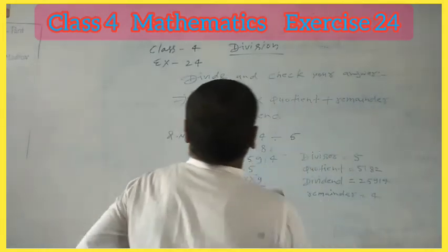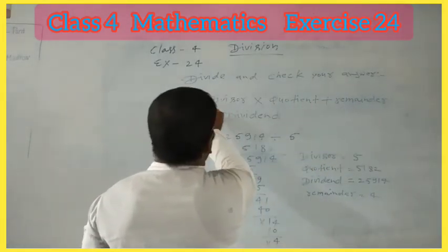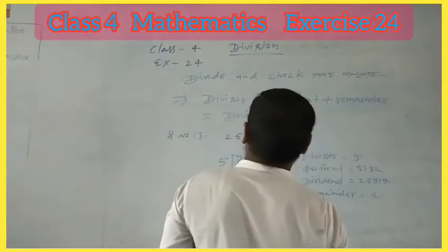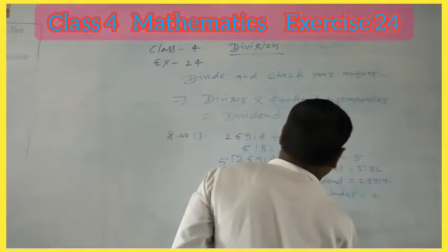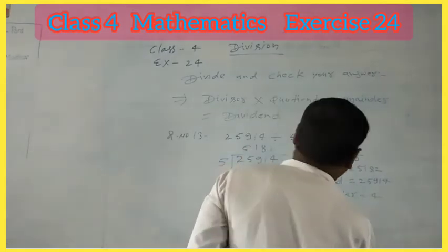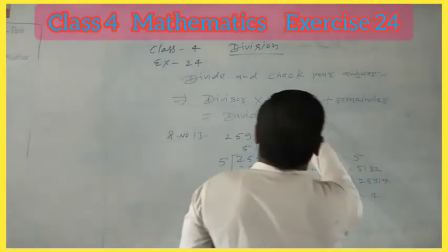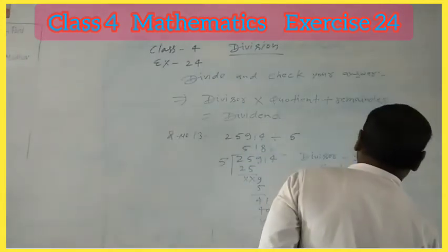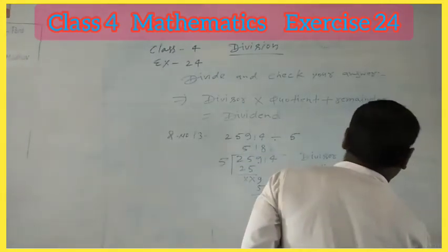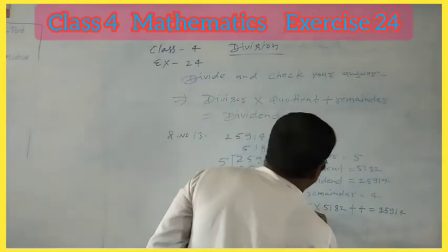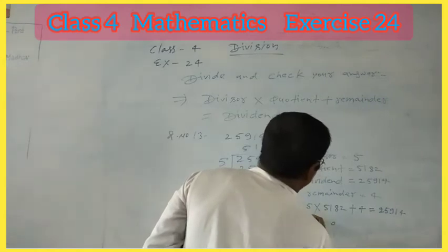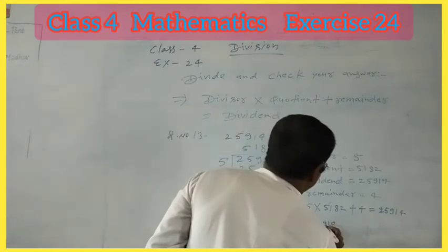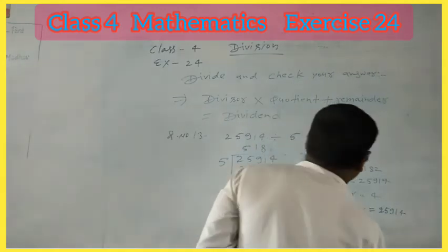How to check the question? I said to you, this is your formula: divisor into quotient plus remainder equals dividend. So divisor is 5, quotient is 5,182, plus remainder is 4, equals dividend 25,914. Now multiply 5 into 5,182: 5 times 2 is 10, carry 1. 5 times 8 is 40, plus 1 is 41, carry 4. 5 times 1 is 5, plus 4 is 9. 5 times 5 is 25.